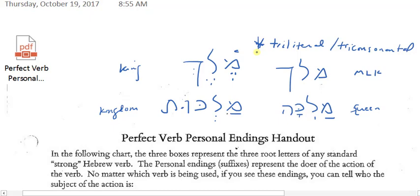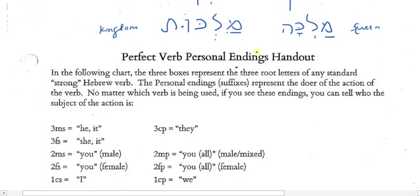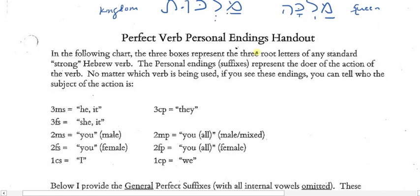We will come across some forms that are biconsonental, that use just two root letters instead of three, and those are often referred to as weak verbs. We'll get to those in second semester Hebrew. For now, we're going to focus our attention on the triconsonental forms.